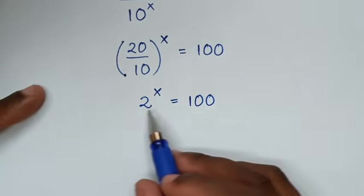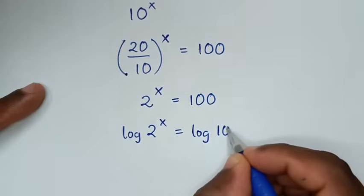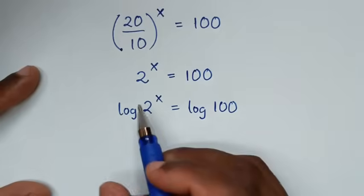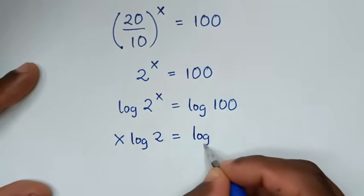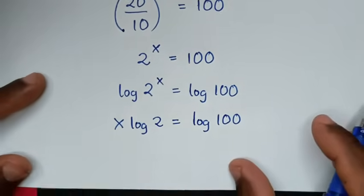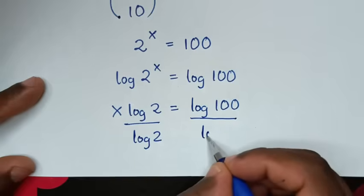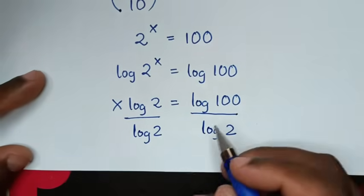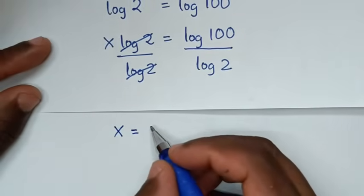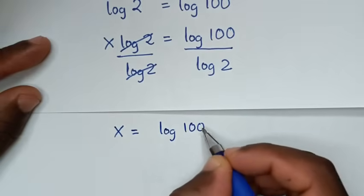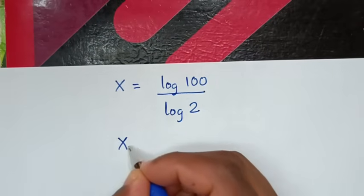Now we will apply log to both sides, so it will be log of 2 power x is equal to log of 100. Then the power x will move to the front, so it will be x log of 2 is equal to log of 100. In the next step, we divide both sides by log of 2, so log of 2 cancels, giving x is equal to log of 100 over log of 2.